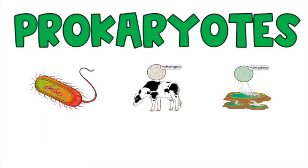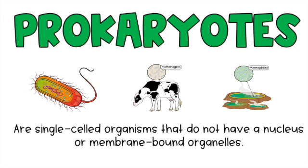Let's get to the important part of today's video — the different types of cells. You're looking at prokaryotes right now and some different examples. A prokaryote is a single-celled organism that does not have a nucleus or membrane-bound organelles. Organelles are tiny little organs within the cell that carry out really important functions, just like the organs in our body, and prokaryotes don't have a membrane surrounding their organelles.